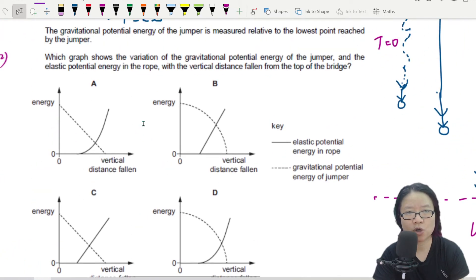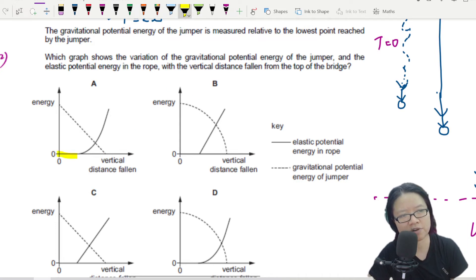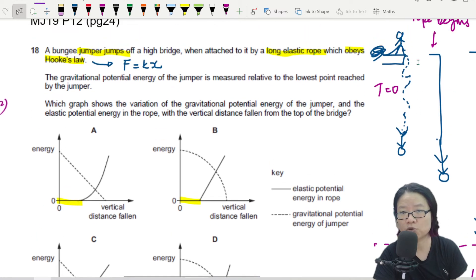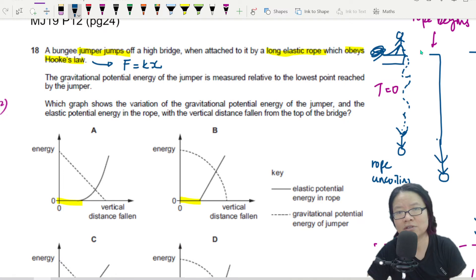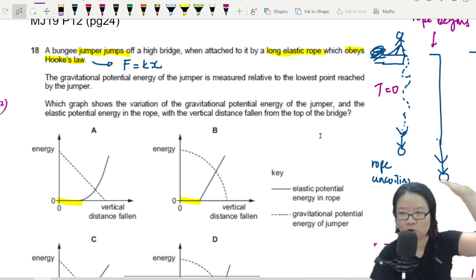So let's go back to the question. Which graph shows the variation of GPE of the jumper and the elastic potential energy in the rope with the vertical distance fallen from the top of the bridge? So as you can see, all the graphs have the same trend, meaning the full line, which is elastic potential energy, will increase and it always have this brief period of time where it is zero. So if you're wondering when that is, it would be when the rope is uncoiling. So at this point, rope is in the process of uncoiling. It's a very long rope. The whole rope is beside the person on the bridge. So as he jumps, the rope will slowly uncoil.